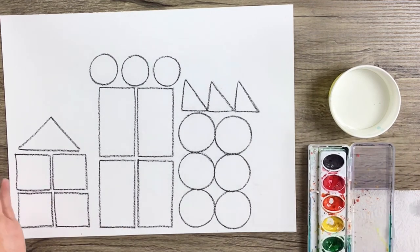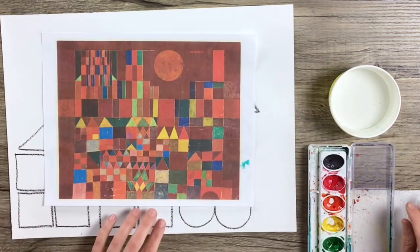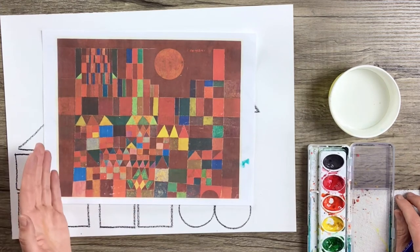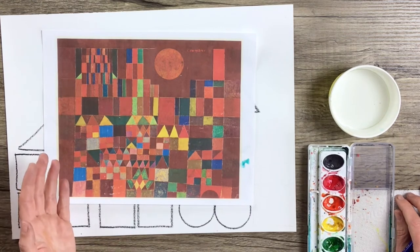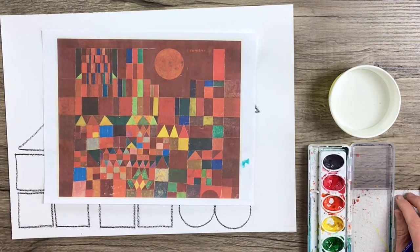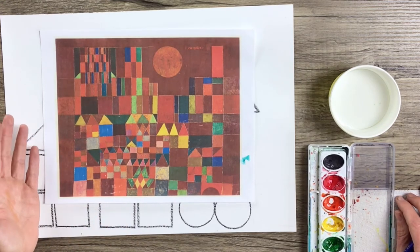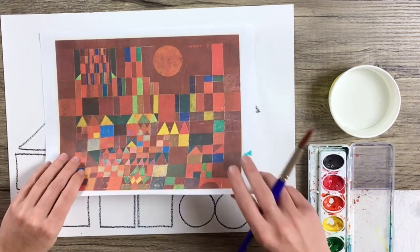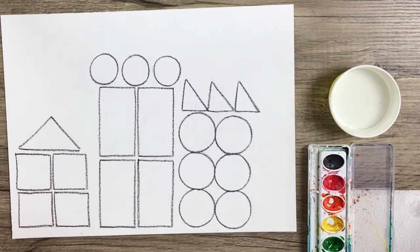The other thing you can think about is if we look at Paul Clay's painting here, City and Sun, you can also think about using warm versus cool colors. Warm colors again are red, orange, and yellow, and cool colors are green, blue, and purple. Here it looks like he used mostly warm colors, but maybe in your painting you want to use mostly cool colors.